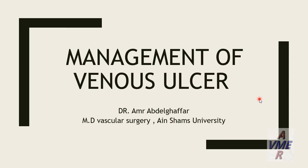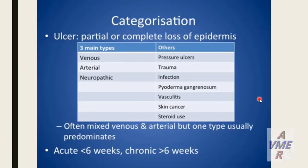Hello everyone. Today we are discussing a very important topic about the venous ulcer. First of all, we have to look to detect the different etiology and causes of ulcers. The main three types of ulcers are venous, arterial, and neuropathic.